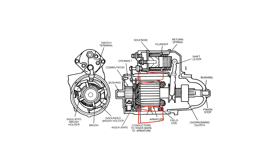The armature itself, that's the bundle of wires that goes on the rotating part of the starter. So that's the armature conductors to riser bars to armature.